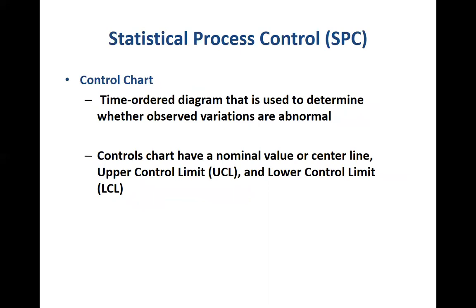Within statistical process control, the way we understand if a process is in control or not is by using what we call control charts. Control charts are essentially time-ordered diagrams where we plot all the outputs coming from a process. There are two limits within a control chart: the upper control limit and the lower control limit. Every output coming out of a process should be between these two limits. If they go outside these limits, then we know there is potentially some assignable cause that needs to be identified and eliminated to bring that process back in control.